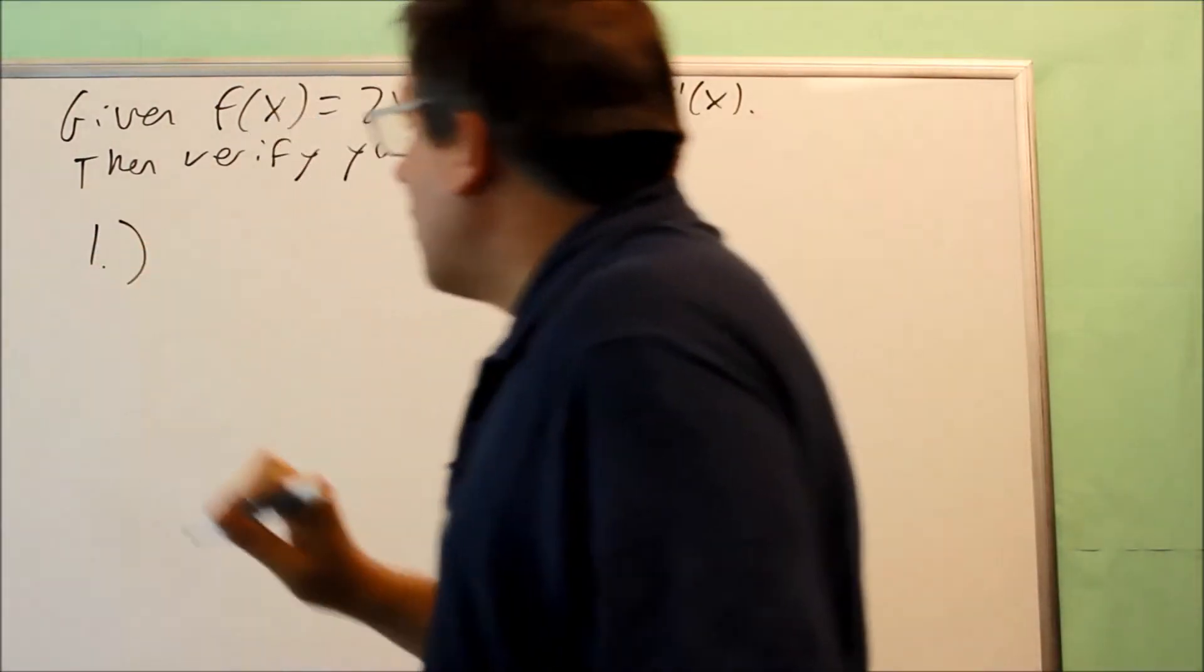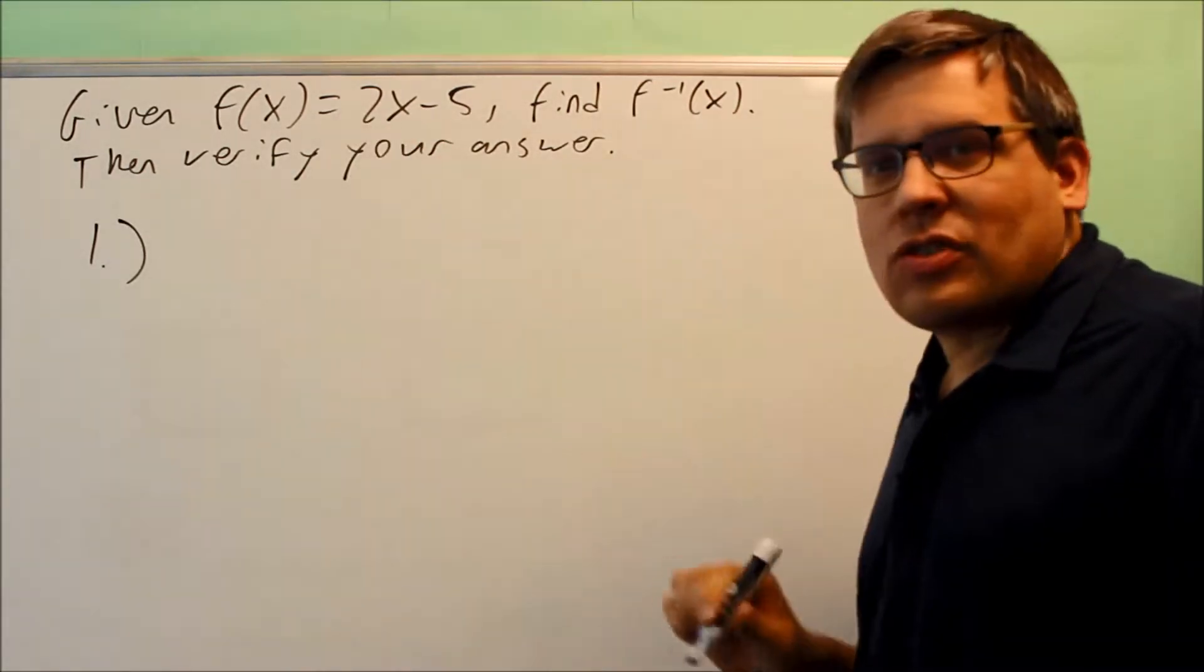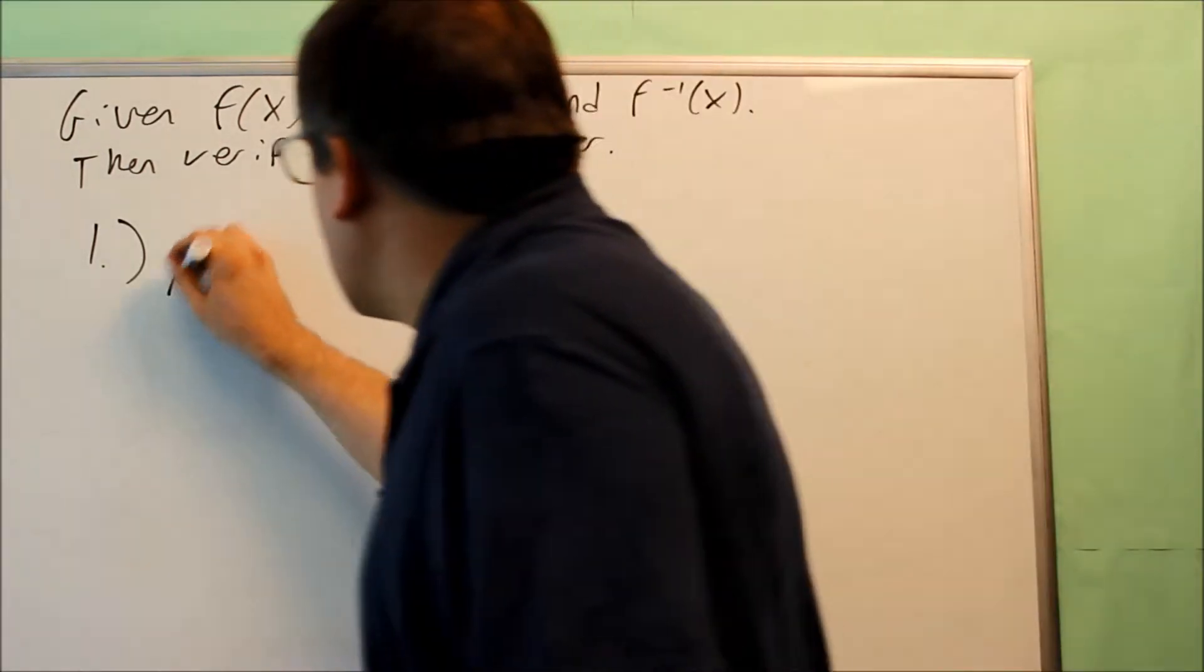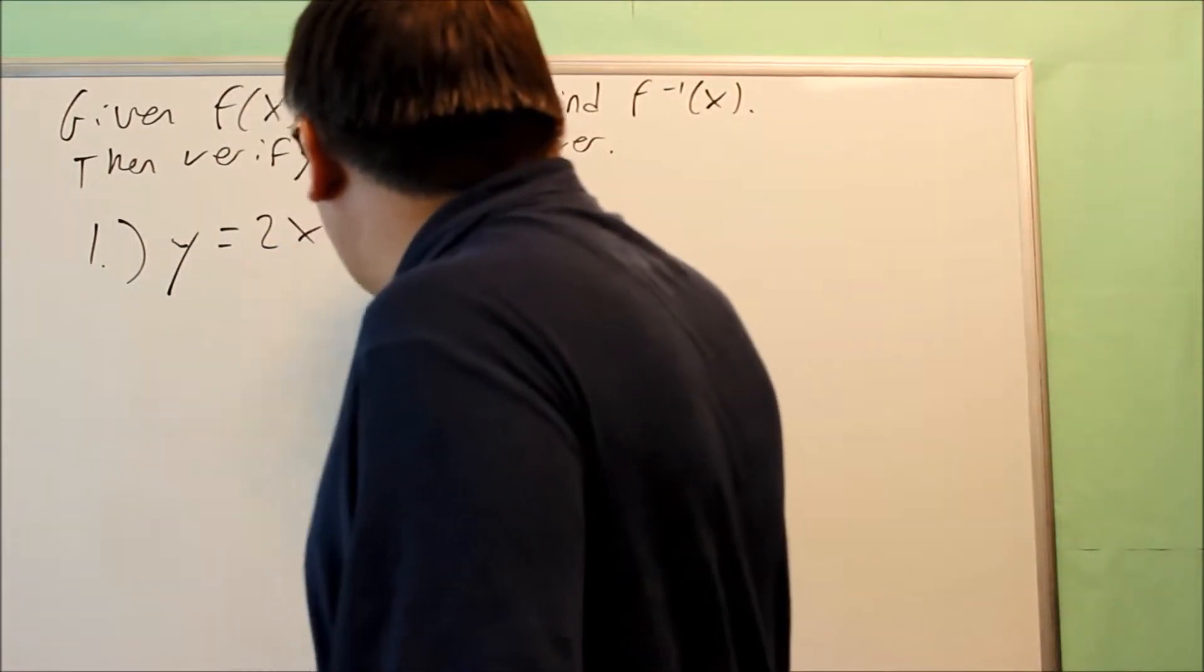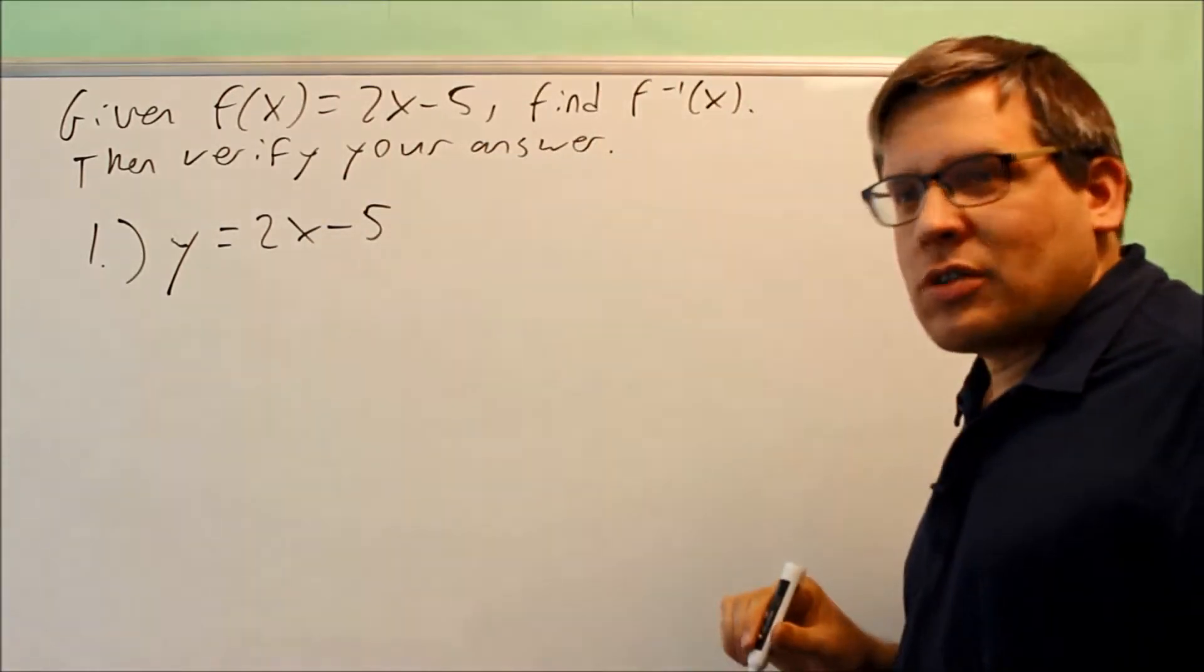Okay, so step number one, it says to change the f of x into a y. All right, y equals 2x minus 5. That's it. Done with that step.